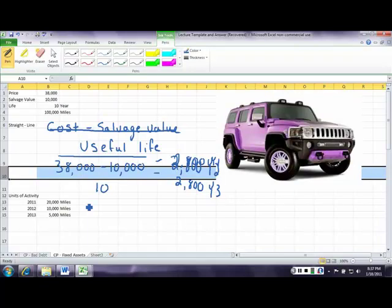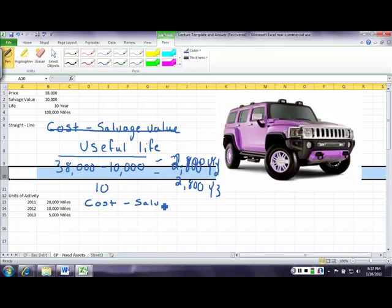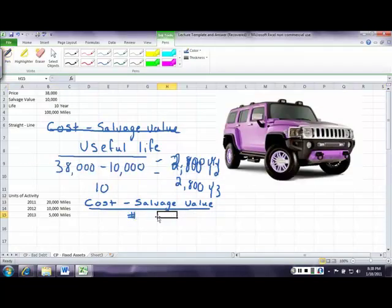Units of activity is a real common one to use for vehicles because it's very similar to straight line, where we take the cost minus the salvage value, but instead of dividing by our useful life, we divide by our number of miles.